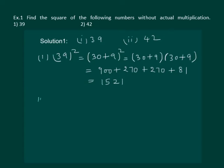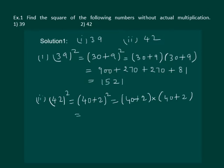Similarly, let us calculate 42 whole square, which can be written as 40 plus 2 whole square, which is same as 40 plus 2 multiplied by 40 plus 2. Now let us open the brackets.